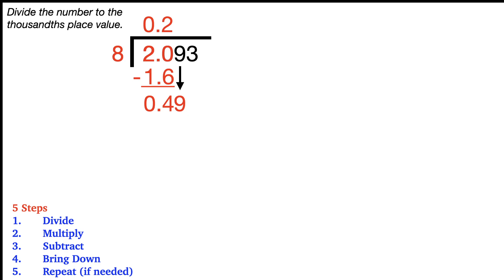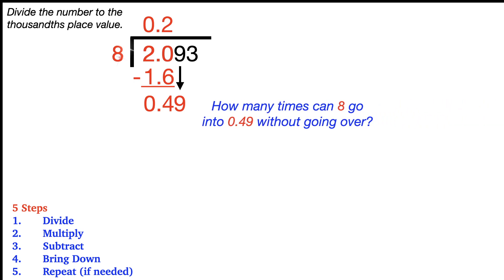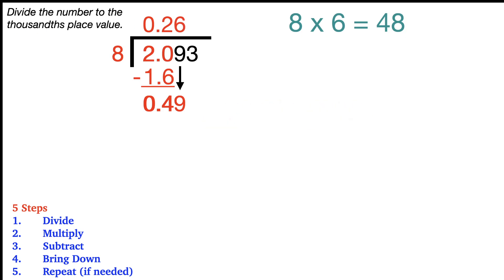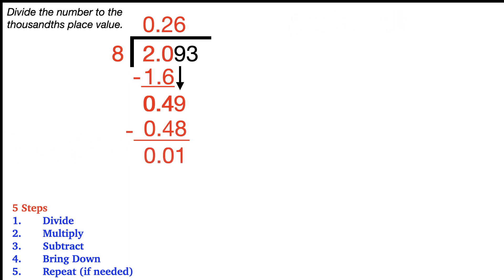Now we start all over again with the divide step. Ask yourself how many times can eight go into forty-nine hundredths without going over. That would be six times because eight times six — and the six goes on top — is equal to 48, but we convert that to forty-eight hundredths. We then subtract. That would be one hundredth, and we're ready to bring down the next digit, which is the three in the thousandths place value. That gives us thirteen thousandths.